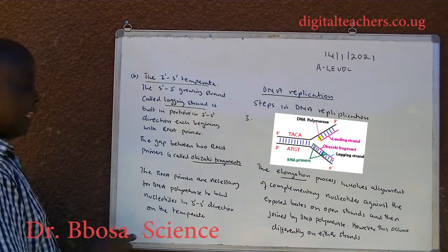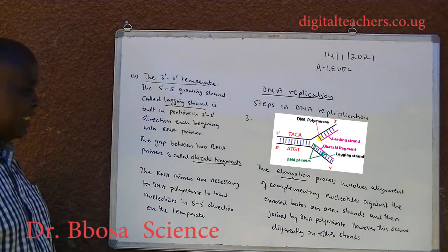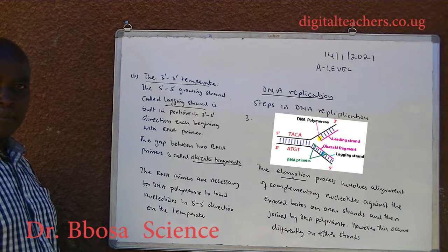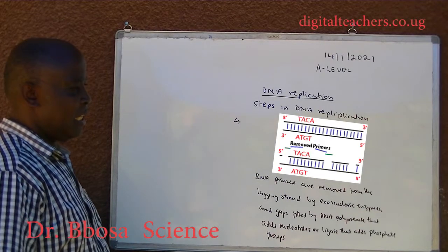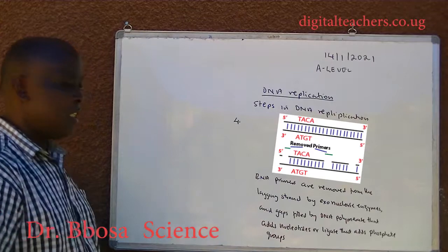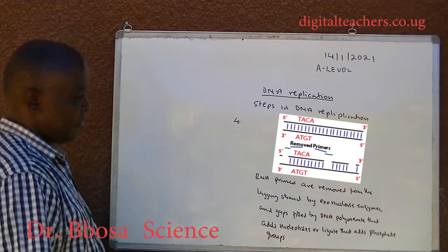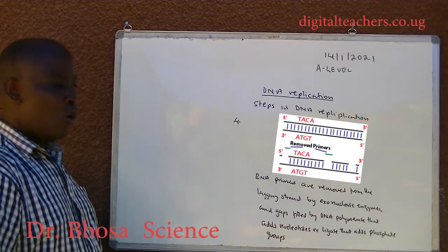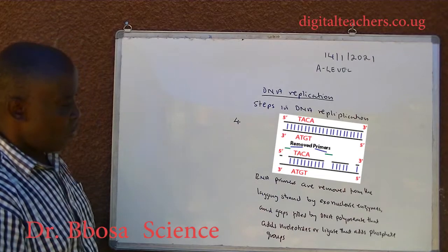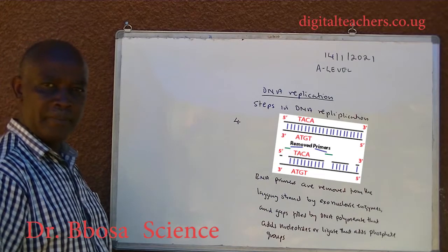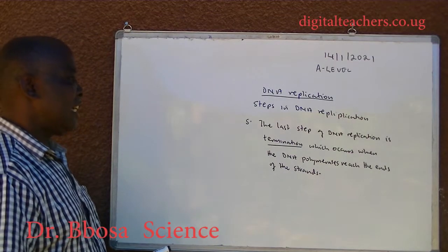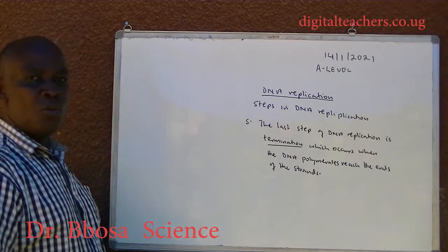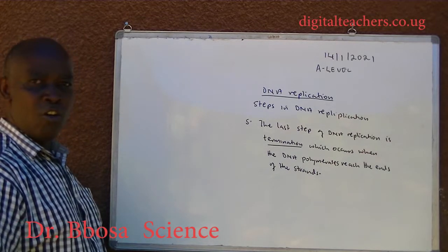The RNA primers are necessary for DNA polymerase to bind nucleotides in the three-to-five direction on the template. Step 4: RNA primers are removed from the lagging strands by exonuclease enzymes and gaps filled by DNA polymerase that adds nucleotides, or ligase that adds phosphate groups.